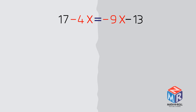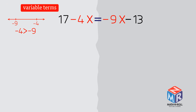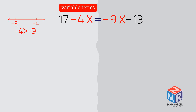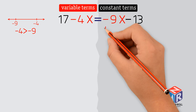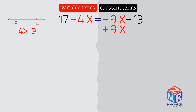Let's try another example: 17 minus 4x equals negative 9x minus 13. We have variables on both sides. We need to pick the side for variables. We can see on the number line that negative 4 is greater than negative 9, so negative 4x has a larger coefficient than negative 9x. So we choose the left side for variable terms and the right side for constant terms. We need to get negative 9x off of the right side. Don't forget to add 9x on the left side to keep the balance.